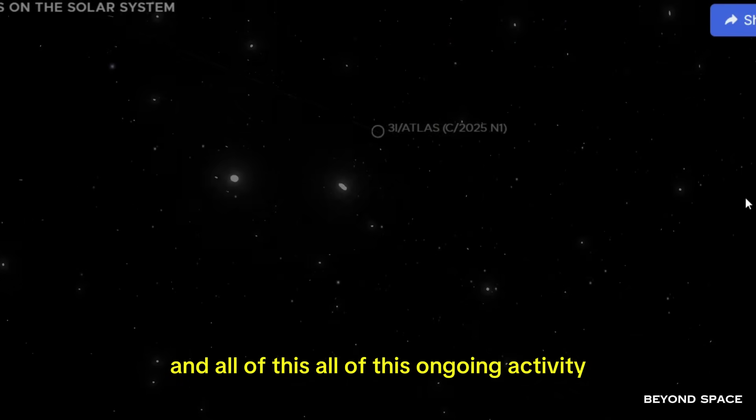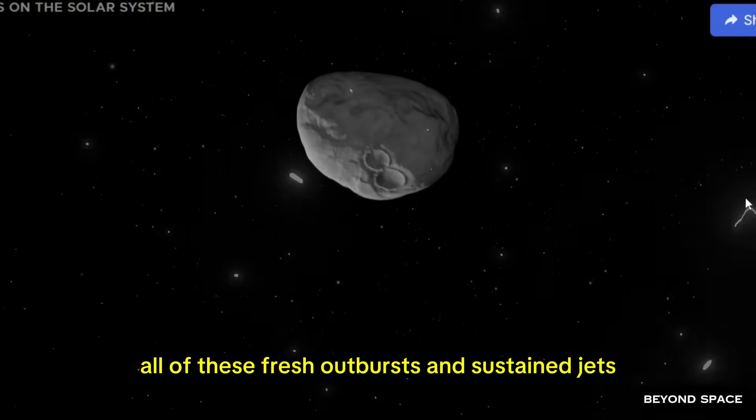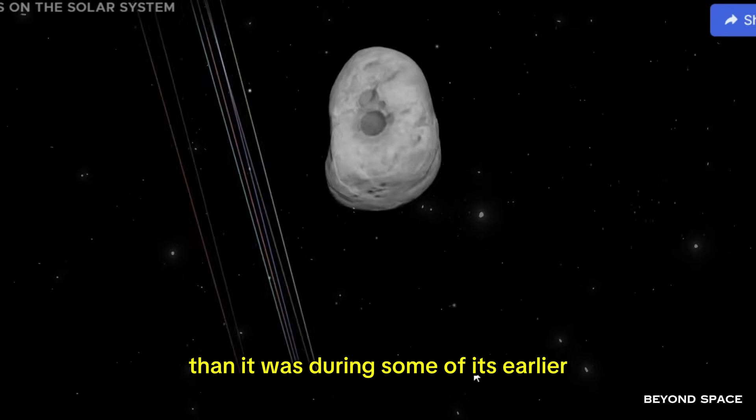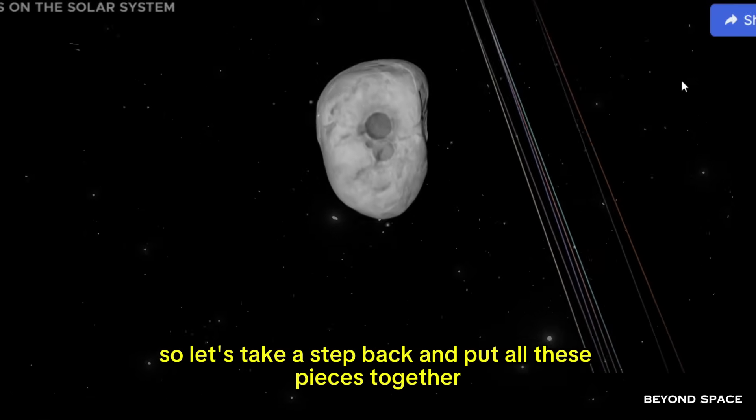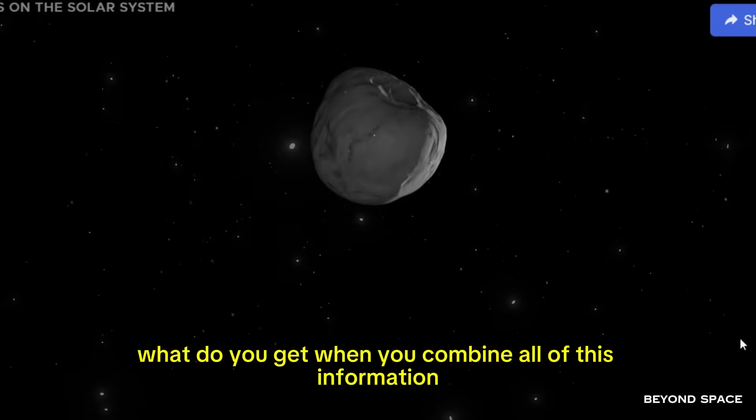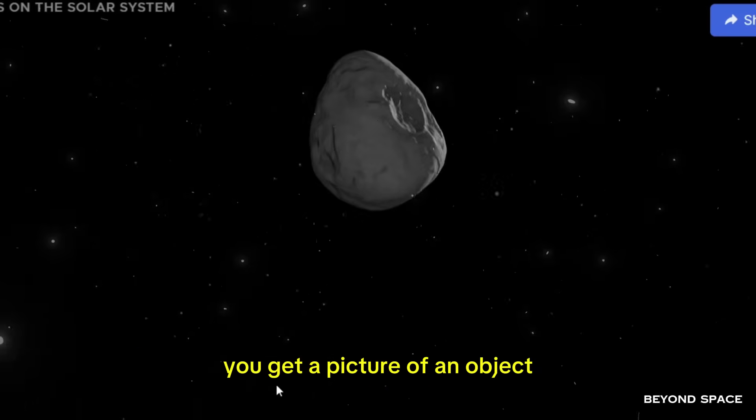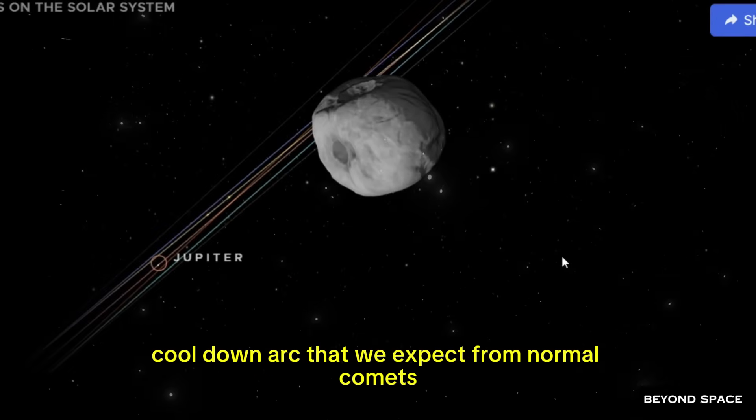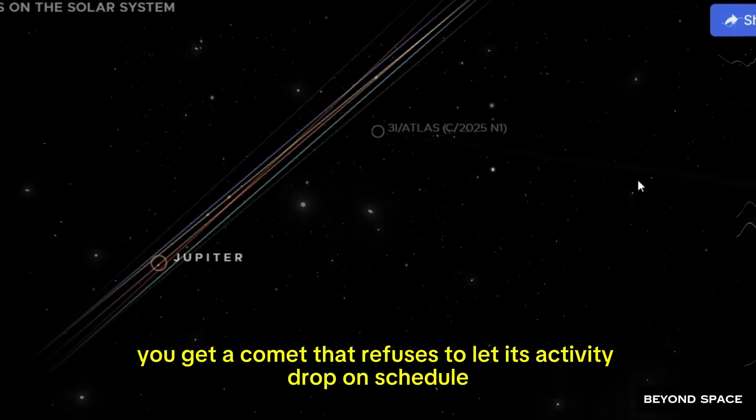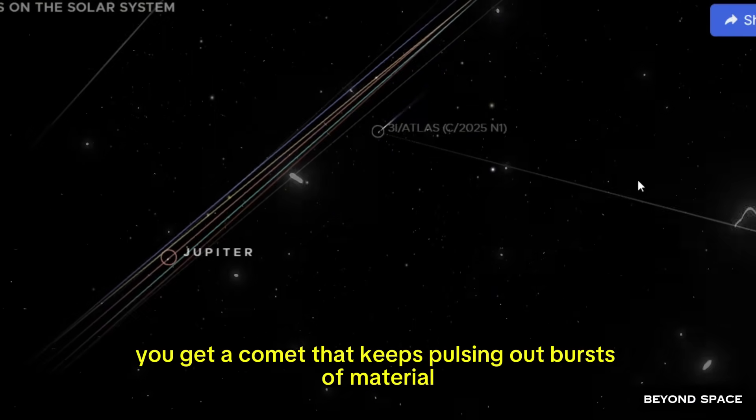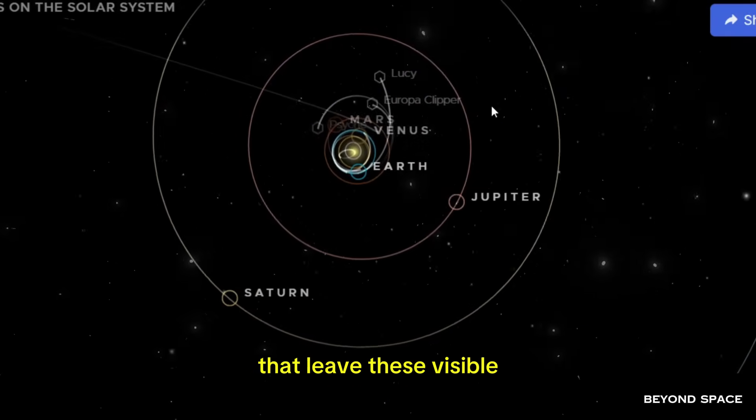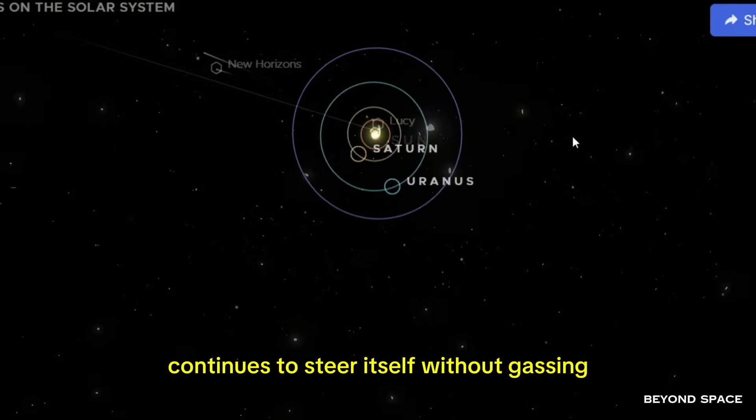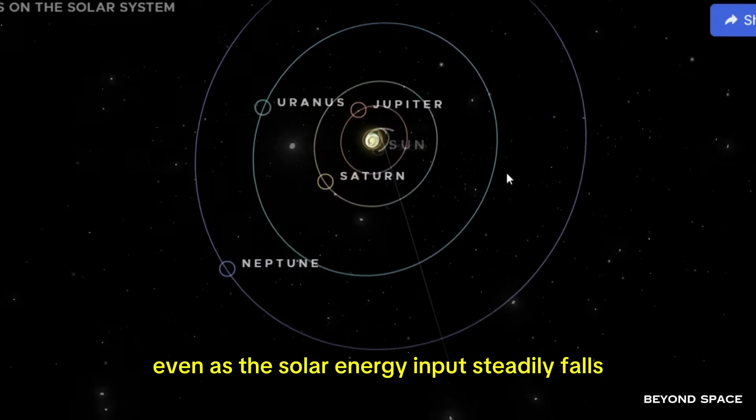And all of this, all of this ongoing activity, all of these fresh outbursts and sustained jets, all of this is happening while 3i Atlas is farther from the sun than it was during some of its earlier, supposedly quieter phases of observation. Let's take a step back and put all these pieces together. What do you get when you combine all of this information? You get a picture of an object that is fundamentally not following the simple heat-up-flare-cool-down arc that we expect from normal comets. You get a comet that refuses to let its activity drop on schedule, the way the models say it should. You get a comet that keeps pulsing out bursts of material that leave these visible shells in its wake. And you get a comet that maintains a strong, non-gravitational push, continues to steer itself without gassing, even as the solar energy input steadily falls.